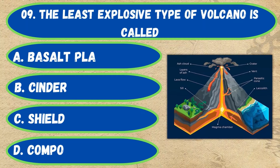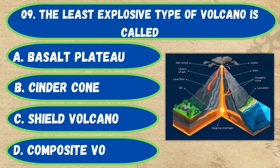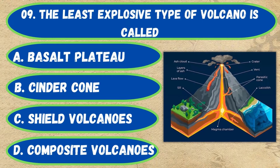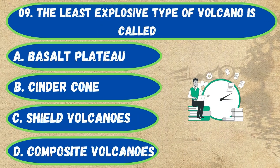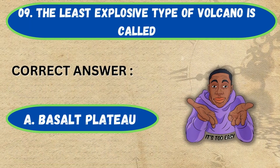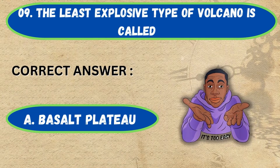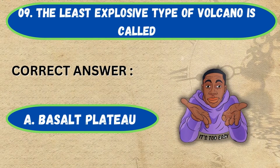Question number 9. The least explosive type of volcanoes is called: option A, basalt plateau; B, cinder cone; C, shield volcanoes; D, composite volcanoes. The correct answer is option A, basalt plateau.